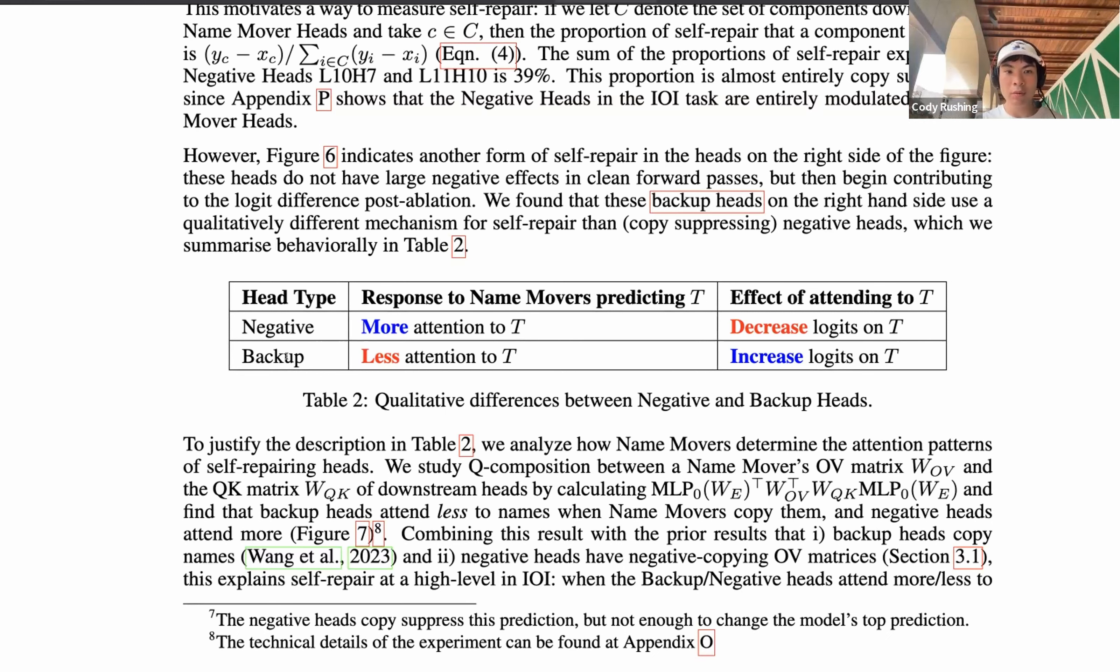So we can think about self-repair more broadly as the question of how do I restore performance, and two ways you can think of this as negative and backup. Negative meaning that there might be a component which originally is doing something negative, but becomes less negative when it tries to self-repair, as opposed to backup, which originally may not be doing anything, but becomes more positive as a result of an ablation. This becoming less negative versus becoming more positive are like two qualitatively different ways we can imagine performing self-repair.